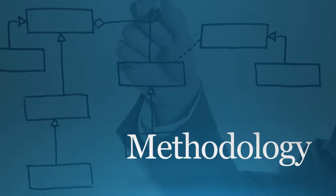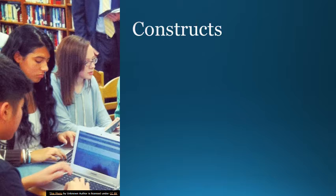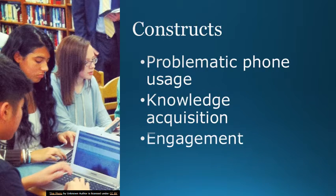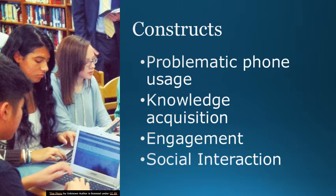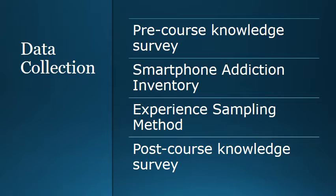To understand the flow state and the impact that cell phone use has, the methodology I am going to use looks at four basic constructs: problematic phone usage, knowledge acquisition, student engagement with content, and social interaction. Data collection will be done with three different surveys. The pre and post course knowledge survey will examine how much knowledge students have about the content before and after the course. A smartphone addiction inventory, shown to be reliable in multiple studies, will identify who has addiction. The experience sampling method, a survey shown to measure flow experiences, will also be used.